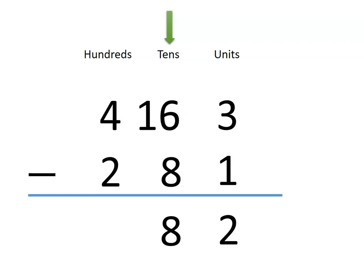Now all that's left is to look at the hundreds column. We have 4 hundreds, and we're taking away 2 hundreds, which leaves us with 2 hundreds. So the difference is 282.